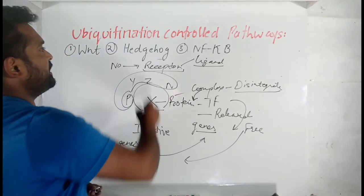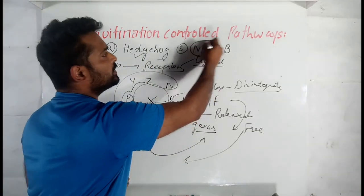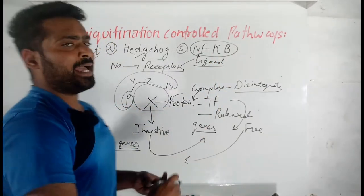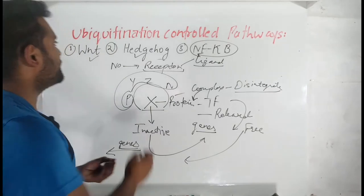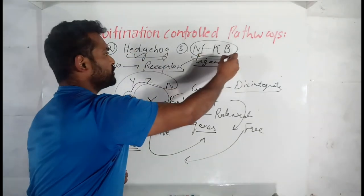This would be same in Wnt or Wnt, hedgehog pathway, but a little bit difference you would see in NF-kappa B. Now let's concentrate on this Wnt. We will discuss all about this in the next videos.